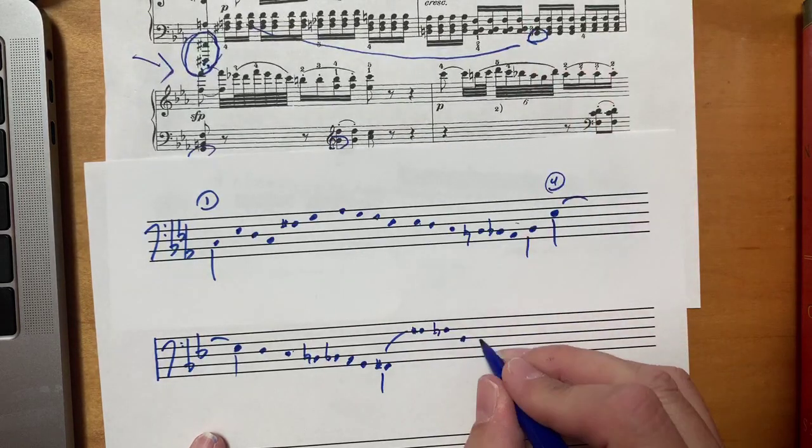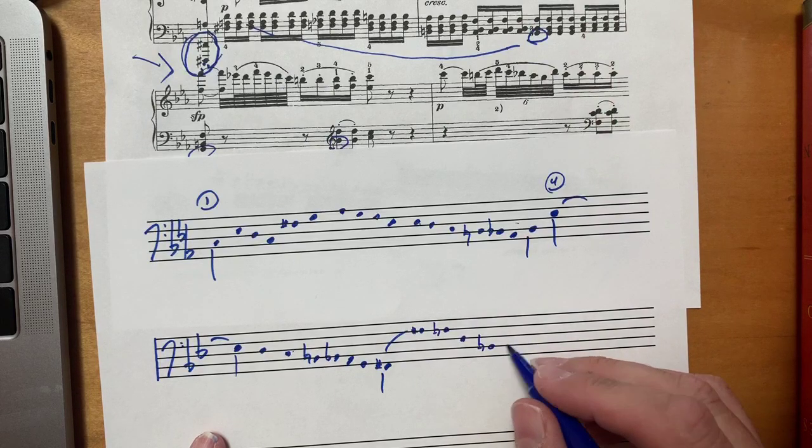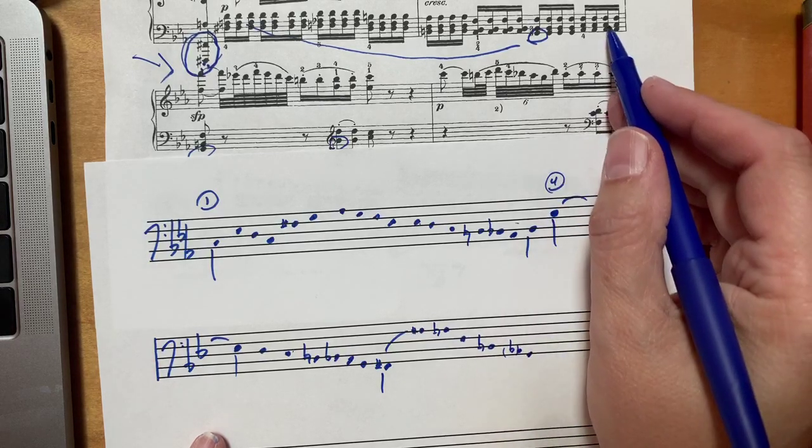And then it slides down a half step to F-natural, D, B, A-flat. Guess I didn't need the flat on there. G, A-flat, G.